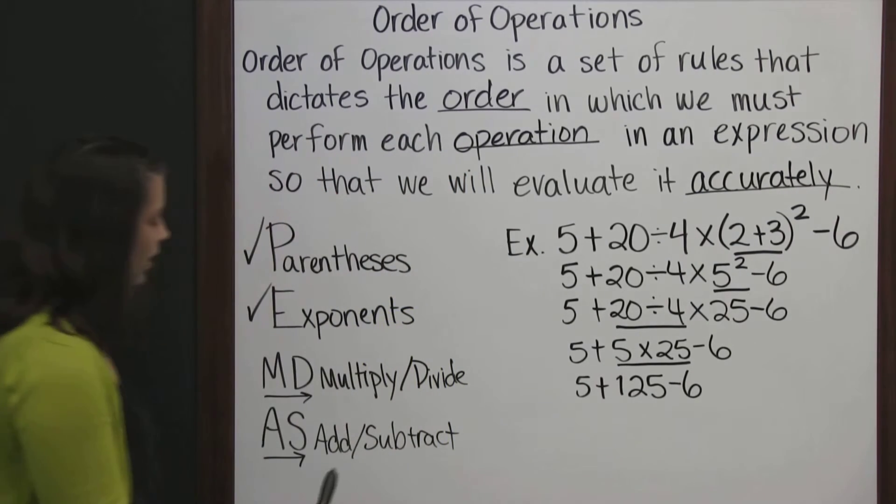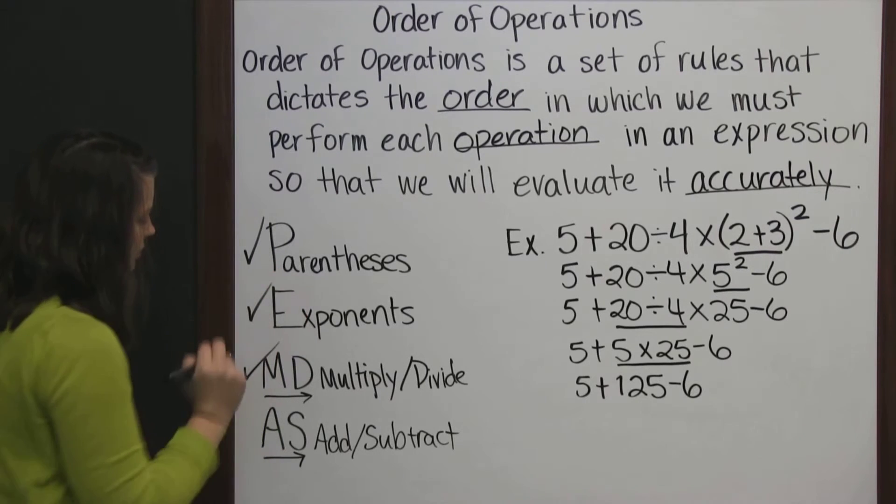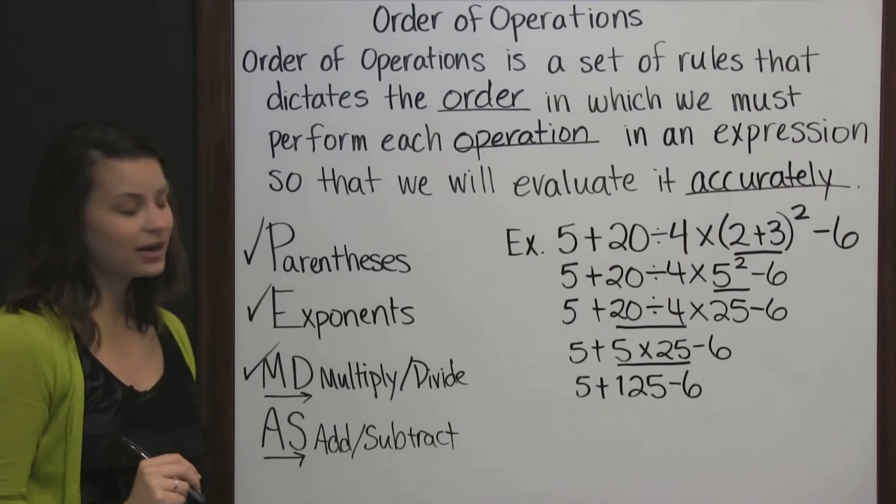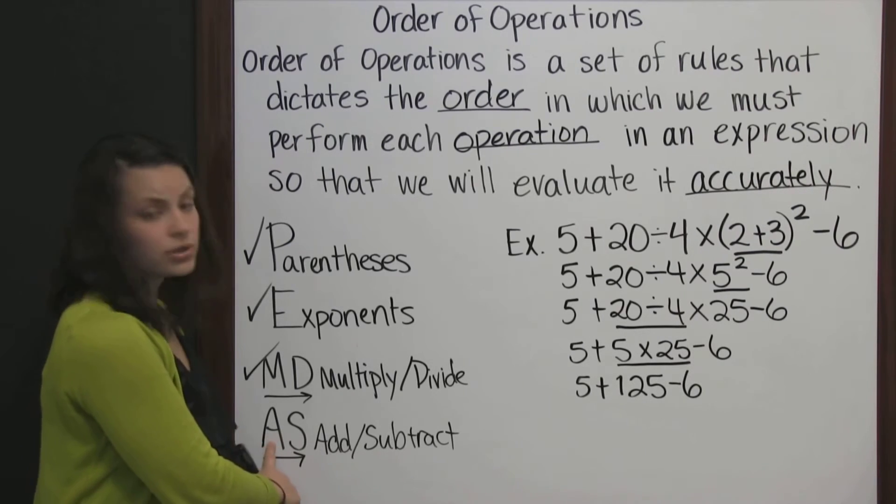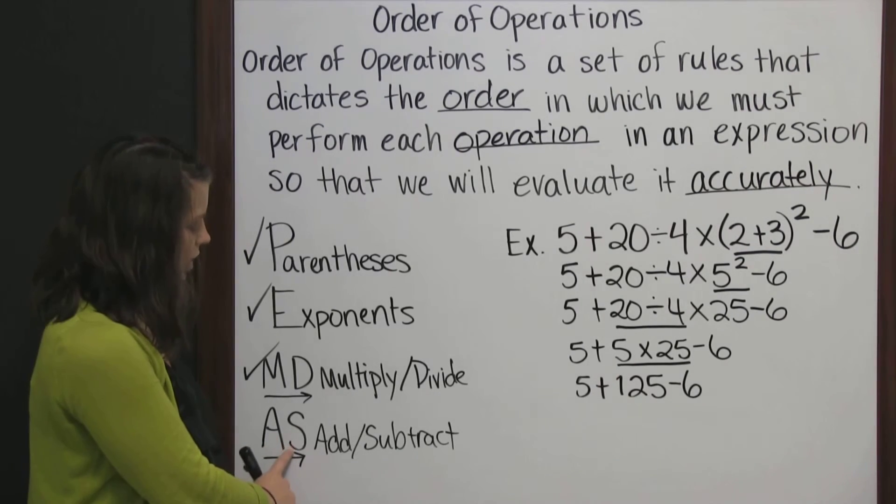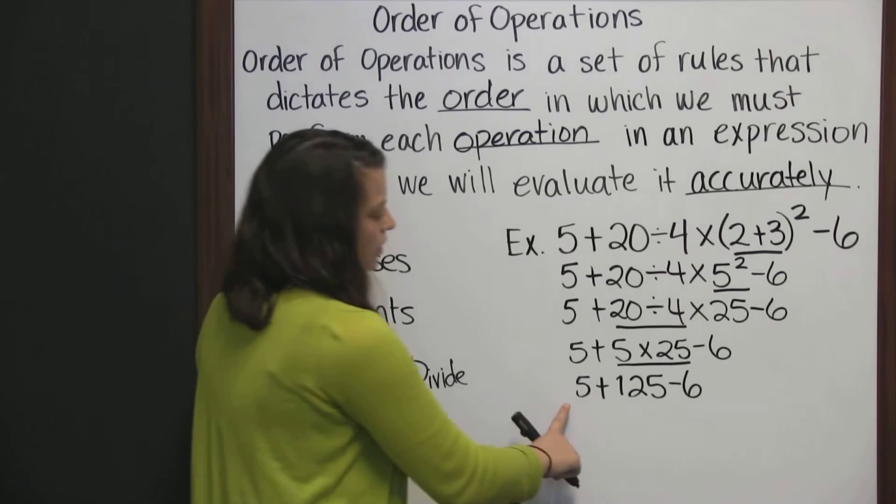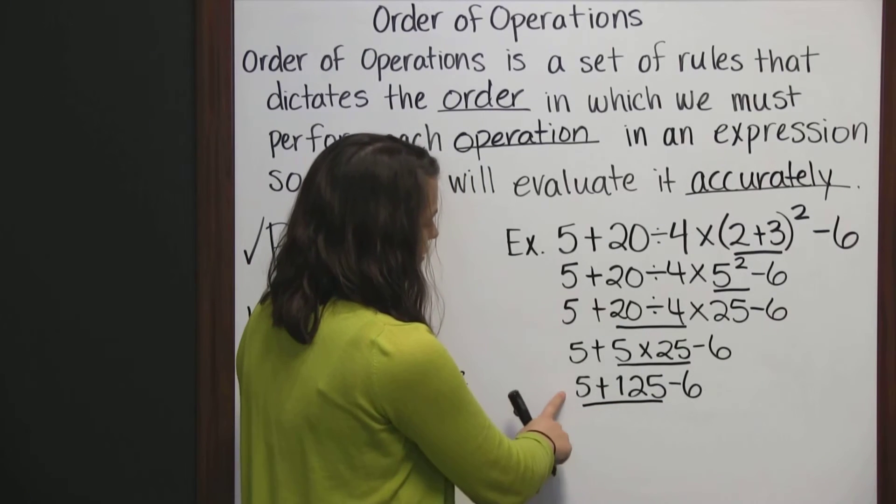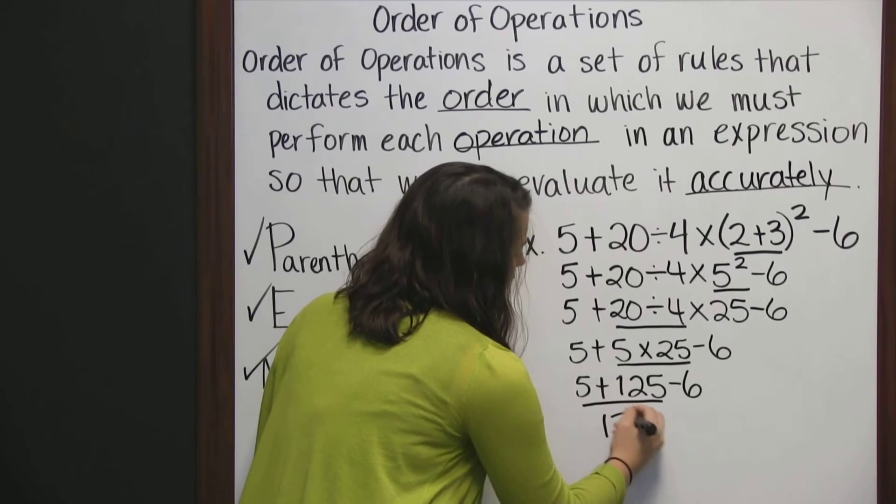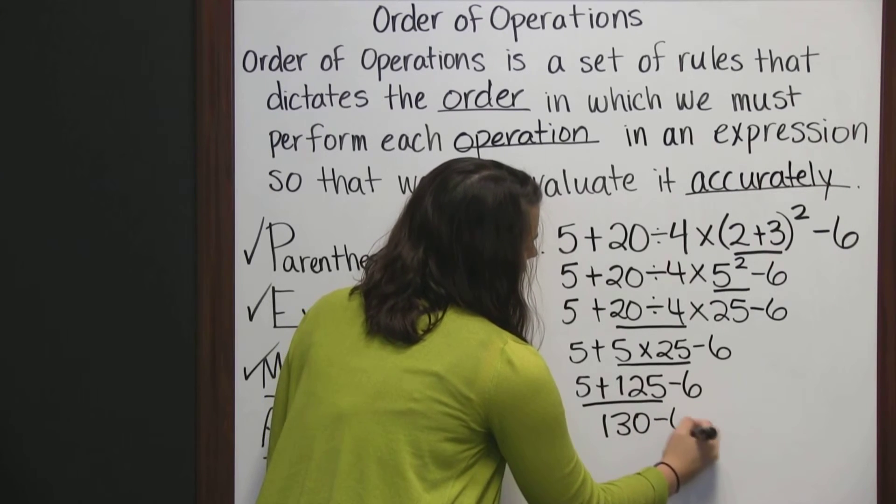So we'll consult PEMDAS again. We're done with that. Moving on to addition subtraction. And again we work these from left to right. We won't always add before we subtract. We'll just do it in order from left to right. So from left to right we see addition first. 5 plus 125 is 130 minus 6.